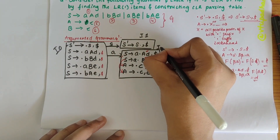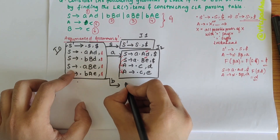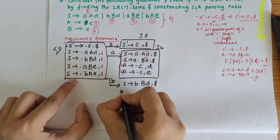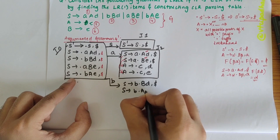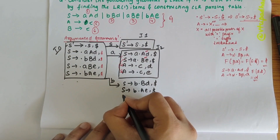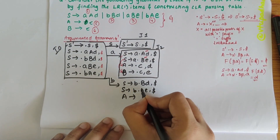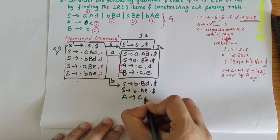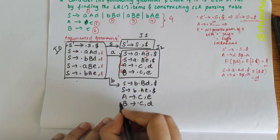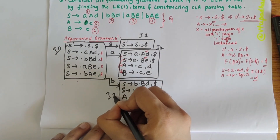Over 'b' in I0 I get two productions: S → B•Bd, $ and S → B•Ae, $. For B, since B → c, I write B → •c, d and B also B → •c, e. Similarly A → c, e. These are the I3 productions.